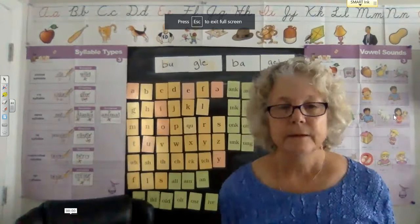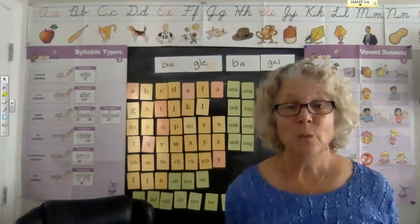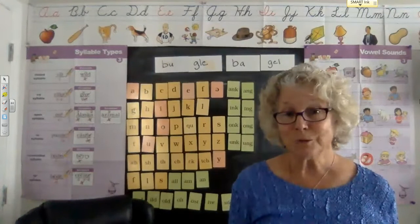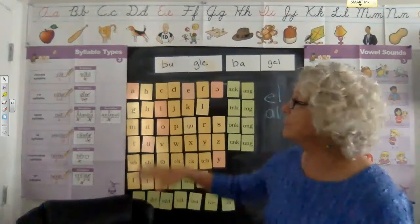Hello, boys and girls. Ms. DeRosa here. We are in Day 2, Week 2 of Unit 8. And we're going to talk today about the difference between a final stable syllable with a schwa and the consonant LE syllable that we've been talking about. I've put two words up here and I want you to help me read them.